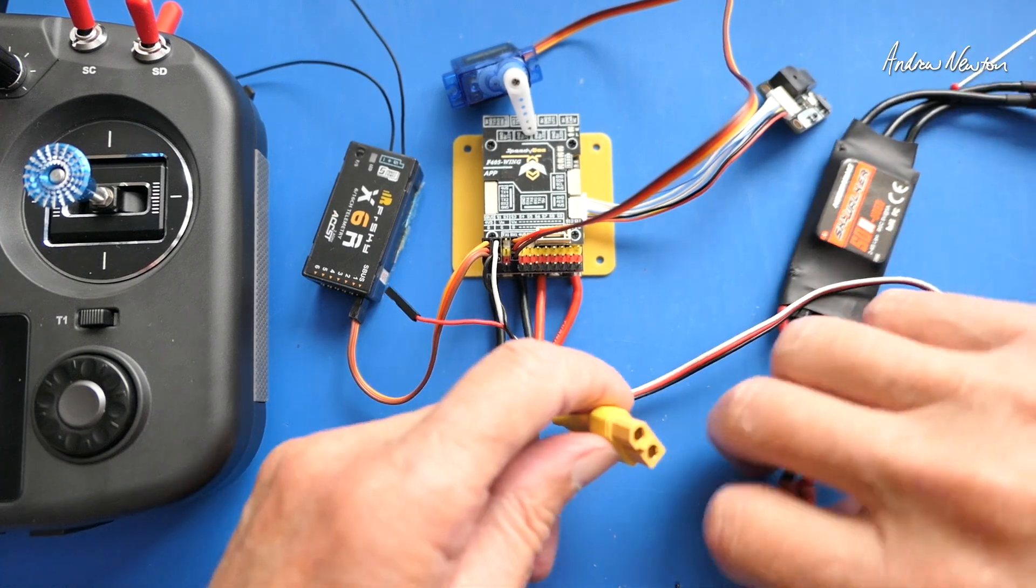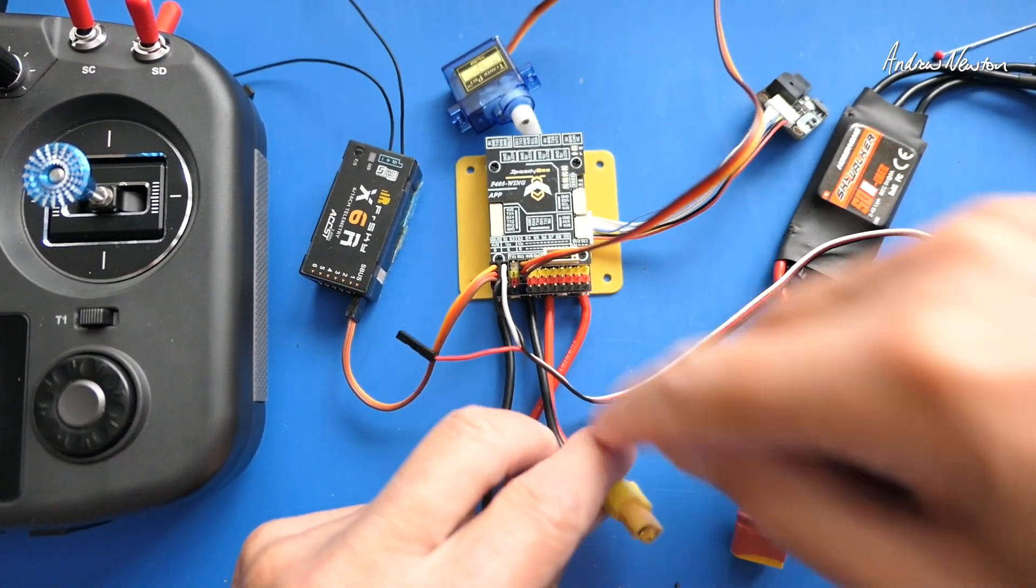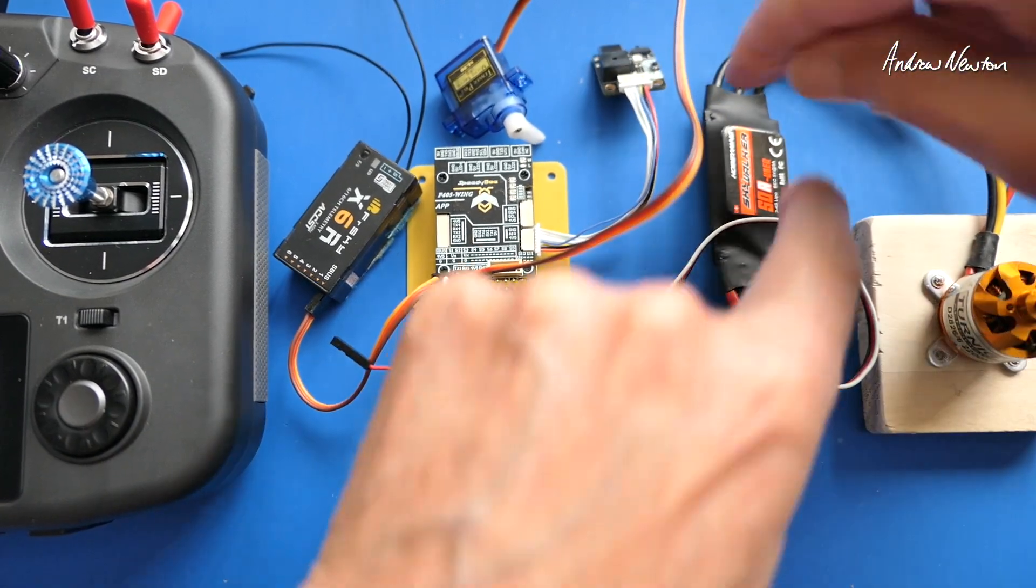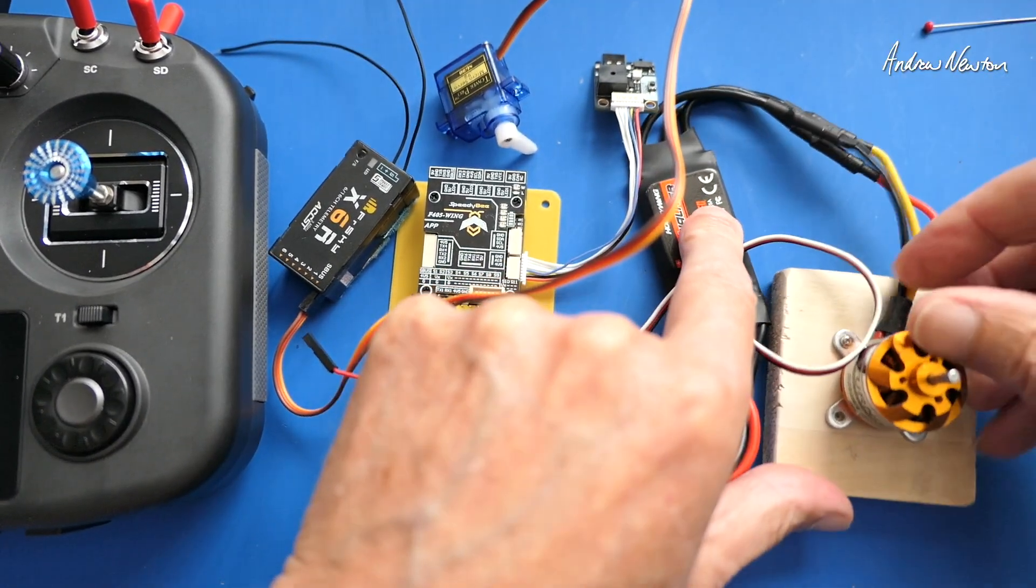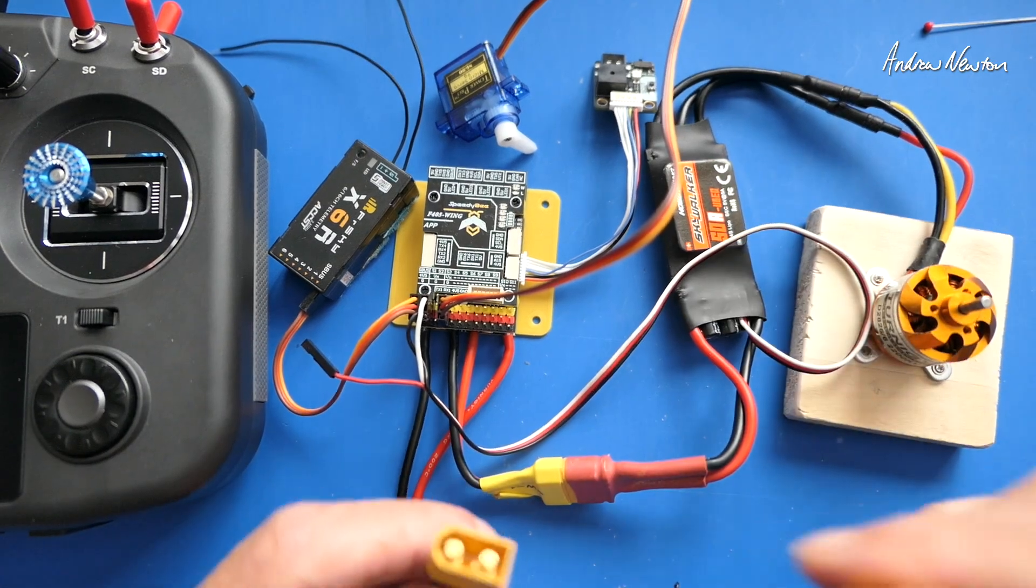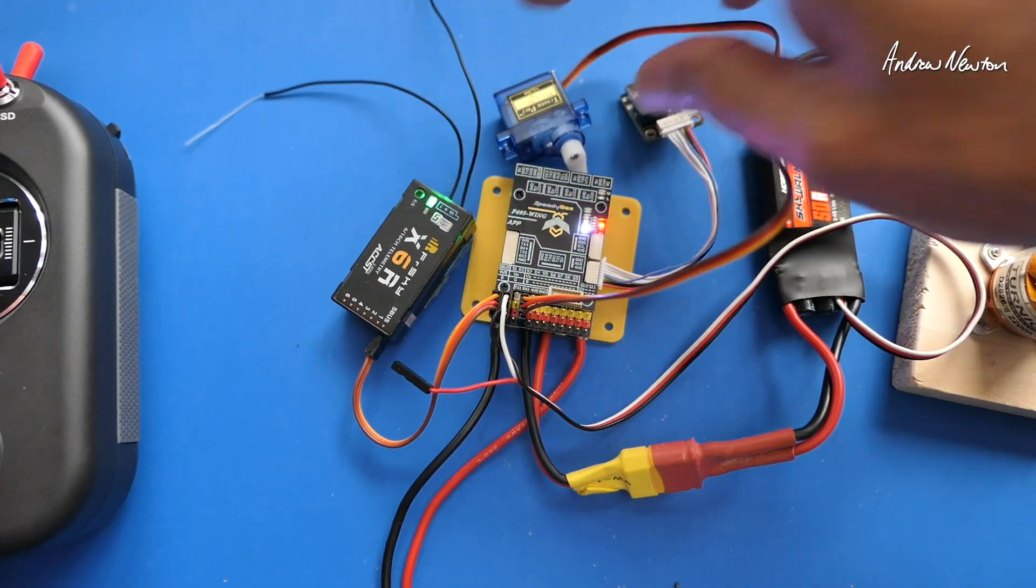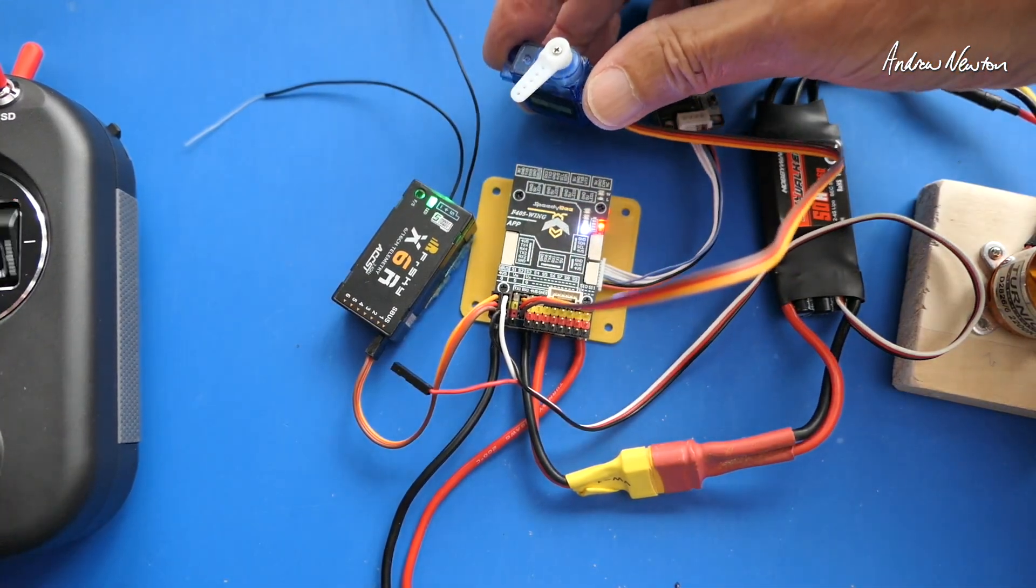Now we can plug this speed controller into the ESC out power there. We have the three cables connecting to the motor and we can now plug the battery in here. So now that's all working as well.